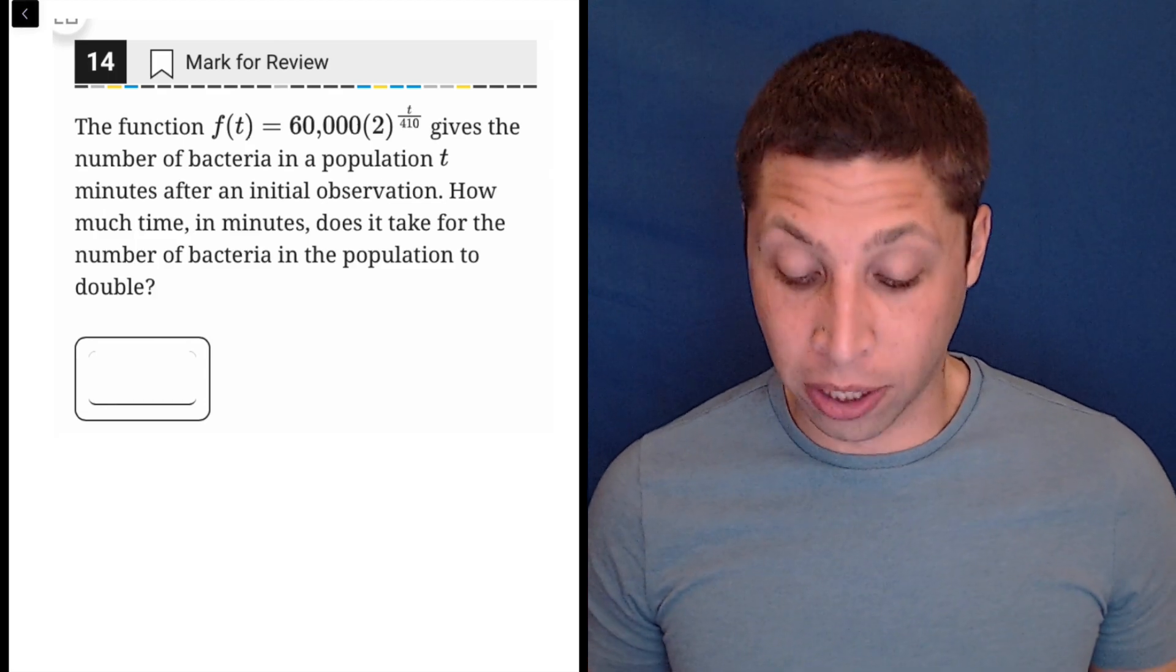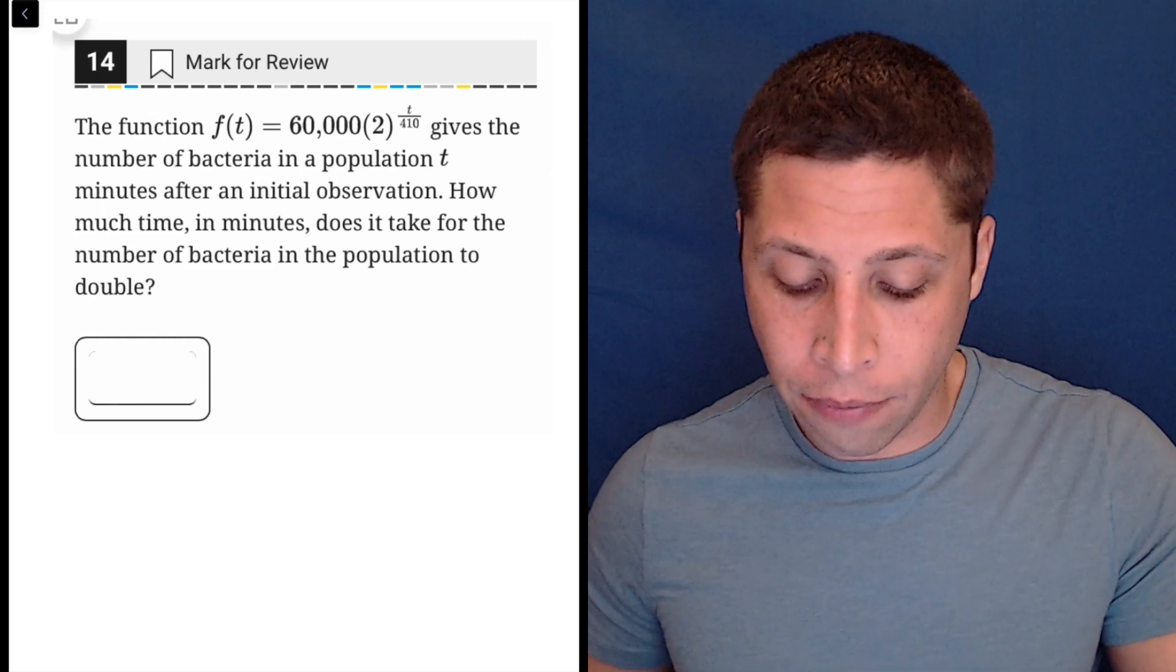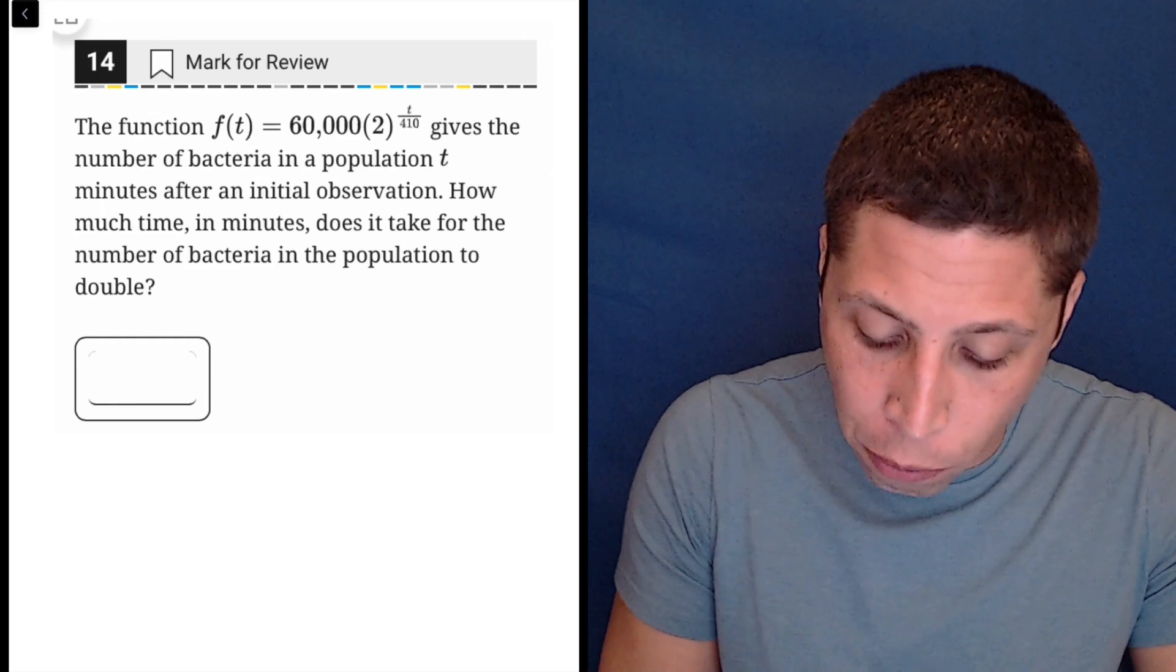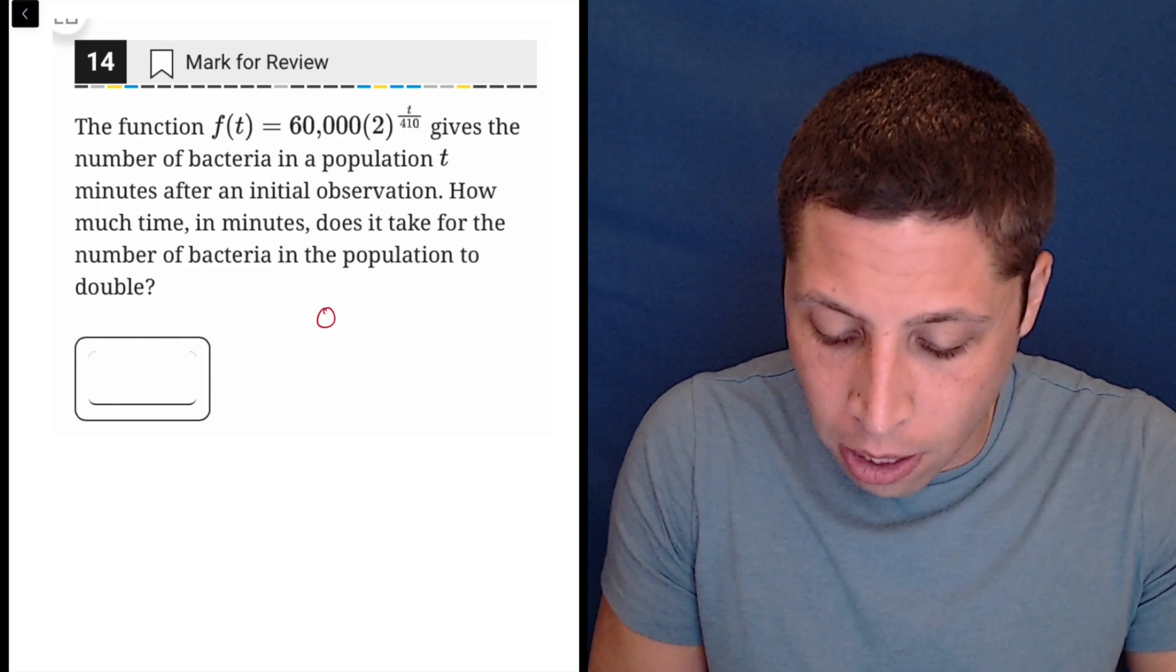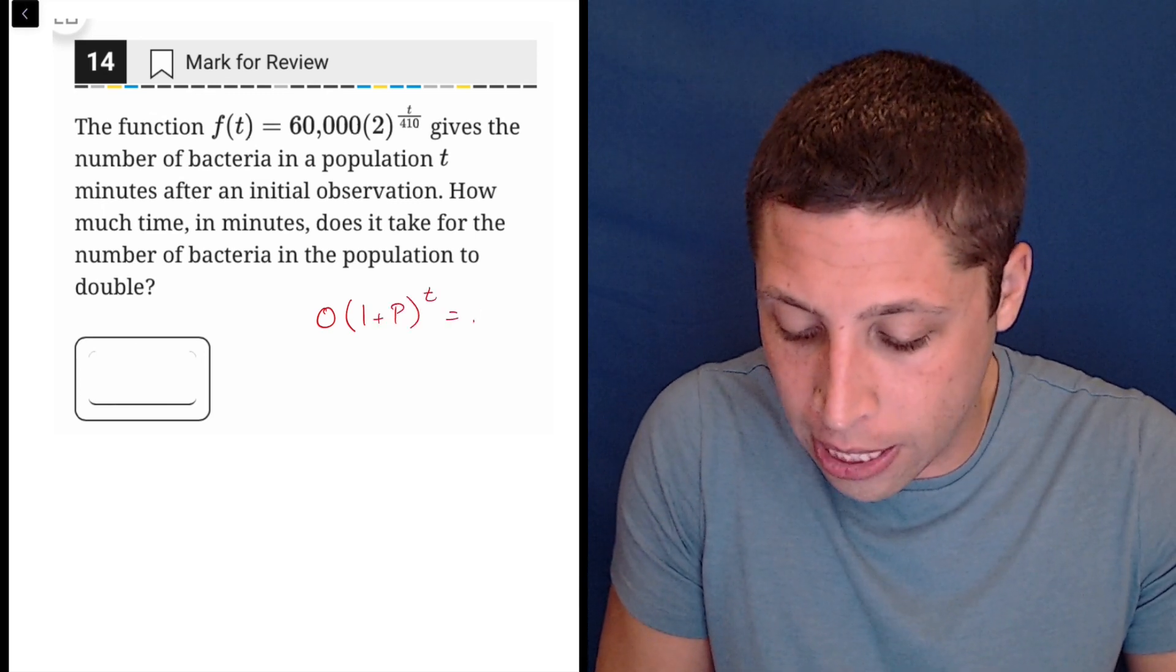Here we have an exponential equation, and we do need to know how to read these in order to understand what's going on. If you use the formula that I use, the open formula, we have something like O times 1 plus P to the T equals N.